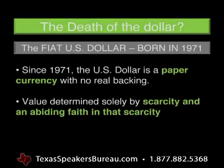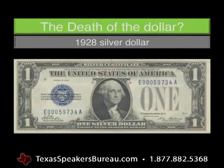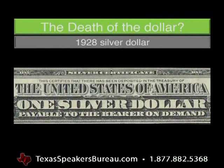Let's keep talking about the dollar. Since 1971, the U.S. dollar is a paper currency. It has no real backing, and its value is determined strictly by its scarcity. In 1928, the dollar actually looked like this — it had a silver certificate across the top of it.